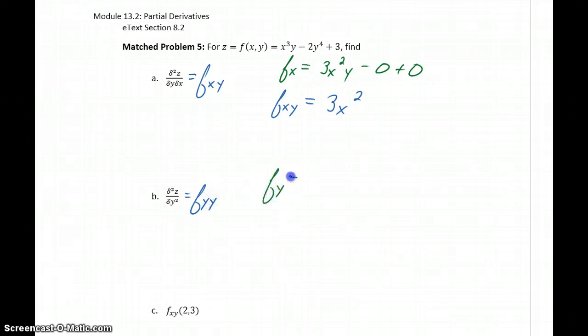So we'll start off by first finding the first derivative with respect to y. So that will be x cubed minus 8y to the third power. And then taking the derivative of that function, now with respect to y.